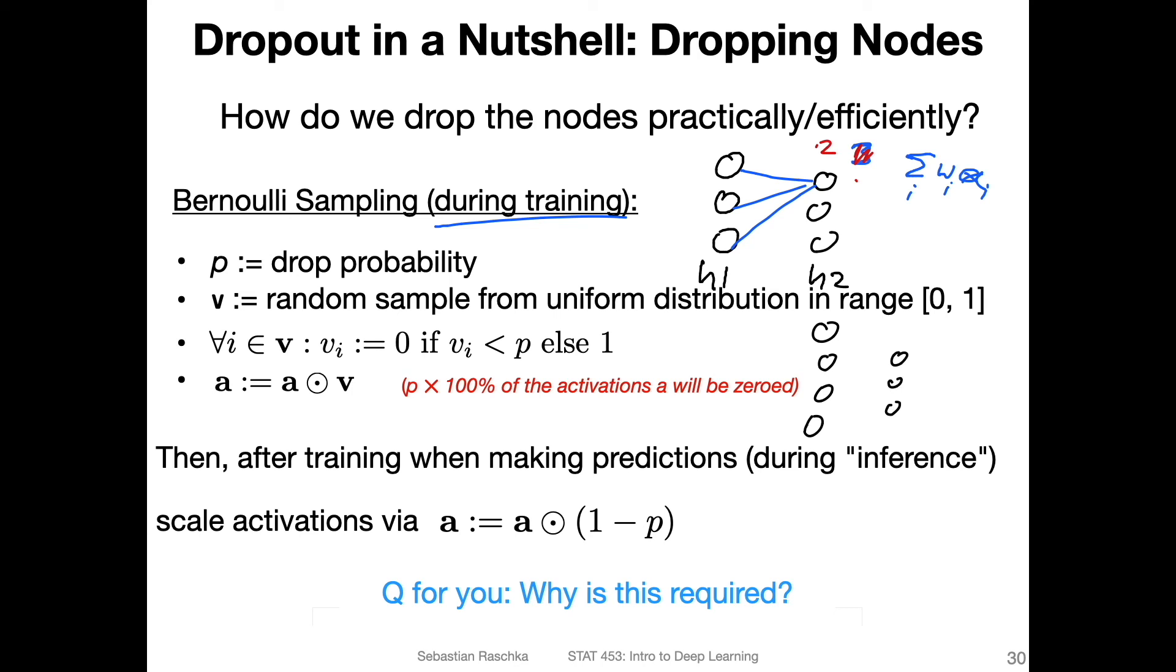So how do we scale it? We scale it by 1 minus the drop probability. For example, 4 × (1 - 0.5), which is 4 × 0.5, which is essentially 2. In this way, we scale all the predictions during testing. That's a simple trick to deal with these activations that might be too large during testing. This is essentially how dropout works.